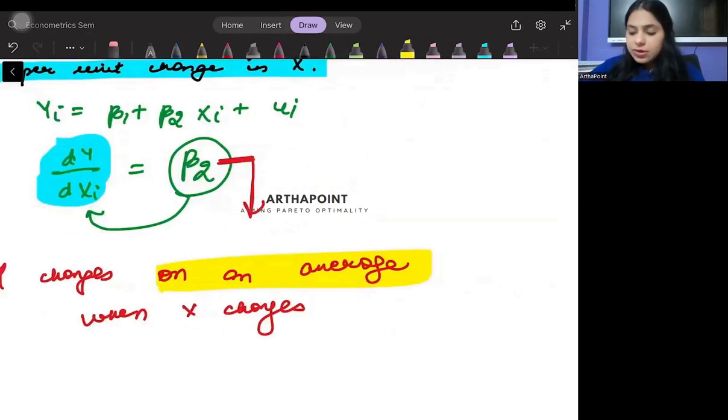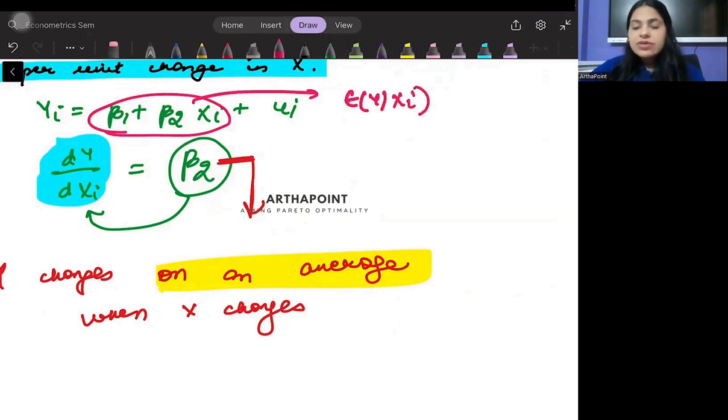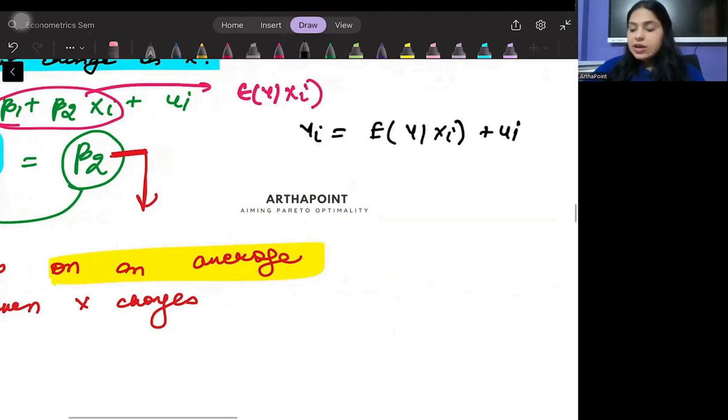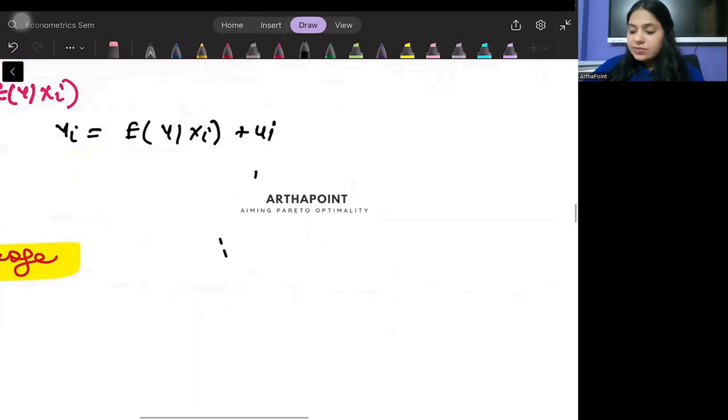So ideally speaking, if you remember, then this part actually represented E of y given xi. This part represented E of y given xi, and a population regression function could have been written as E of y given xi plus ui, where E of y given xi can be written as beta 1 plus beta 2 xi.